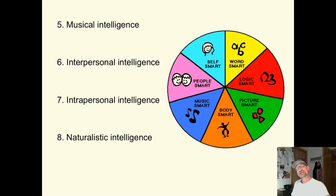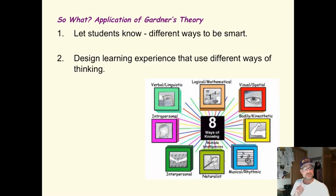Now remember, Gardner says intelligence is the ability to solve problems. You need to let your students know that it's okay to be smart in different things and not in other things. It's okay to have strengths and weaknesses. We are all good at some and not good at others. You should have a poster like this in your classroom so they know that.